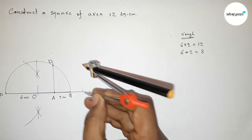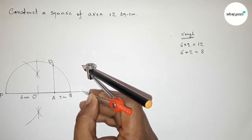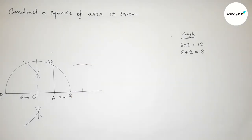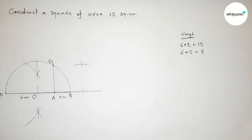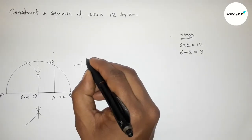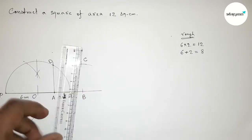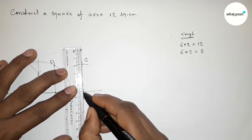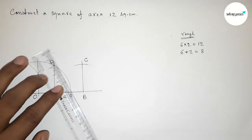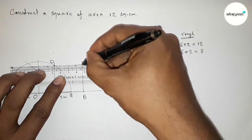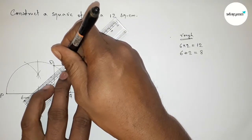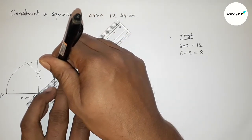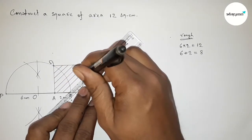Keeping the compass with the same length, drawing arcs from point A and from point D to locate points B and C. Taking point B and point C. Joining side BC and then joining side CD. We now have square ABCD. Drawing lines to mark the area of the square.